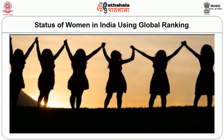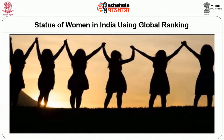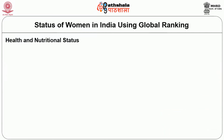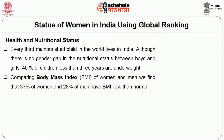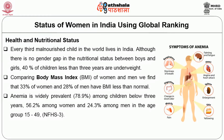Let us look at the status of women in India using global rankings, starting with health and nutritional status. Every third malnourished child in the world lives in India. Although there is no gender gap in nutritional status between boys and girls, 40 percent of children under 3 years are underweight. Comparing body mass index, 33 percent of women versus 28 percent of men have BMI below normal, showing gender inequality. Anaemia is widely prevalent — 78.9 percent among children below 3 years, 56.2 percent among women and 24.3 percent among men aged 15 to 49, according to NFHS third edition data.